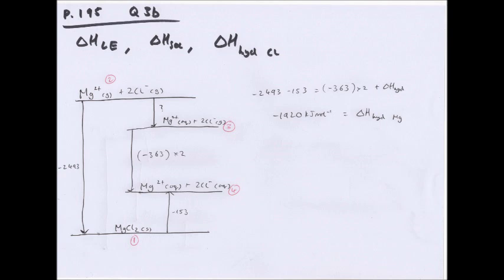Now we use lattice enthalpy, solution, and hydration together. When a solid dissolves, step 2 to 1 is lattice enthalpy — gaseous ions forming the ionic lattice. The reverse process, the ionic lattice dissolving, gives a positive value: +2,493 kJ mol⁻¹. But once the lattice dissolves, each ion is then hydrated — they become aqueous — and the overall enthalpy change is the enthalpy change of solution.